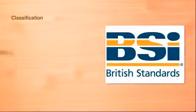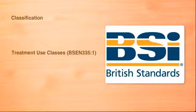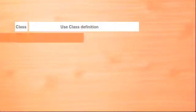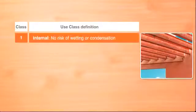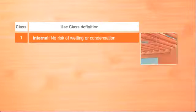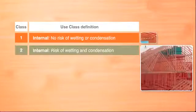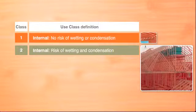British standards require wood treatments to be specific to a component's use. There are five use classes. Class 1: Internal — no risk of wetting or condensation. Class 2: Internal — risk of wetting and condensation, such as roofing timbers.